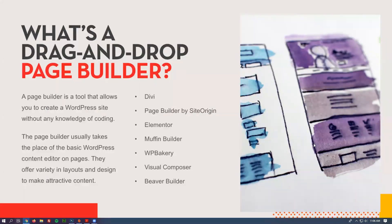Examples include Divi, Elementor, and Muffin Builder — there are quite a few of them. Sometimes they're white-labeled, meaning it's technically Divi or Elementor but renamed to match the theme. They take the place of the built-in content editor, and you use them to create your layout instead of the regular content editor.